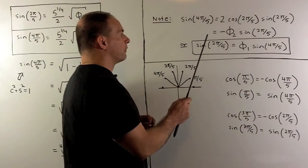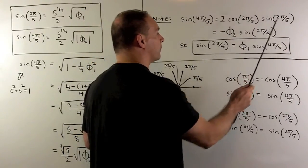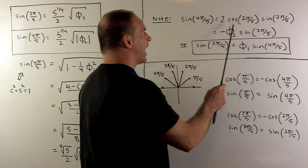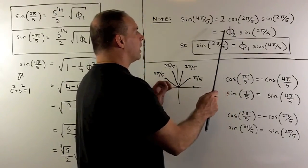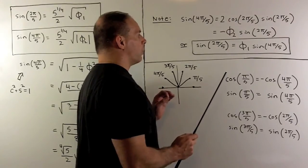Now, this just comes from our double angle formula for sine. So we'll have the sine of 4π/5 equals 2 cosine of 2π/5 sine of 2π/5. Then we know this value. And I can get rid of the -φ₂ by multiplying both sides by φ₁.